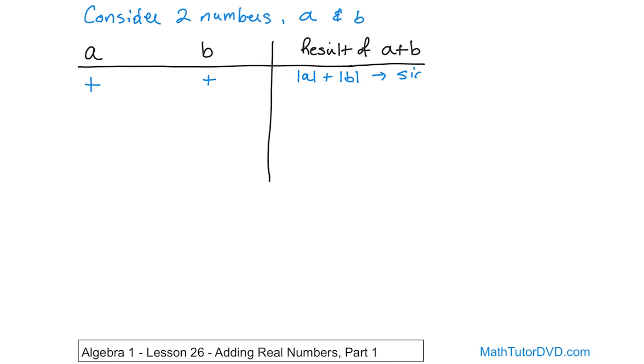And the sign of the result - what is it going to be? It's always going to be positive, because if you add three plus four, you get positive seven. So if you add positive to positive, you just add them together and get a positive result.